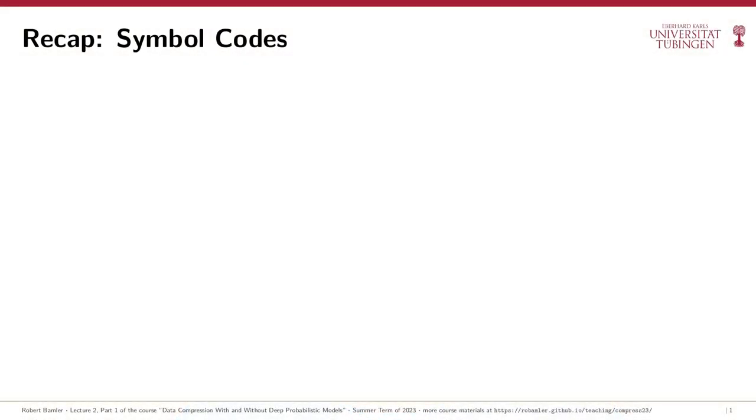Welcome to the second week of the course on data compression with and without deep probabilistic models. In this and the following video, we'll prove the so-called source coding theorem, which states a fundamental theoretical lower bound on the expected bitrate of lossless compression. In the last video, we introduced our first class of lossless compression codes, so-called symbol codes.